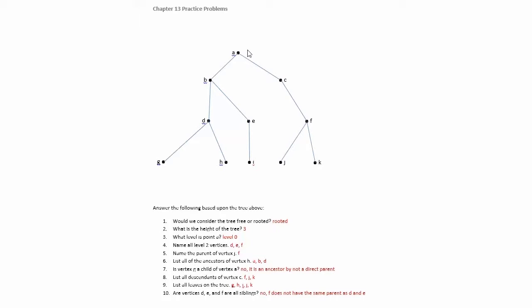Is vertex G a child of A? So here's G. The parent would be D. A is going to be an ancestor, but it's not going to be a parent.